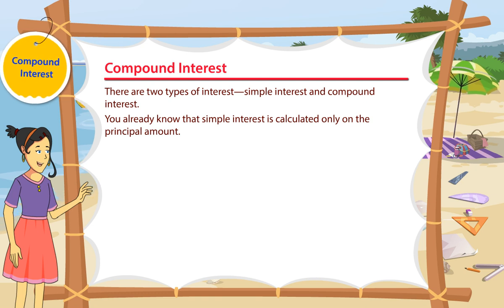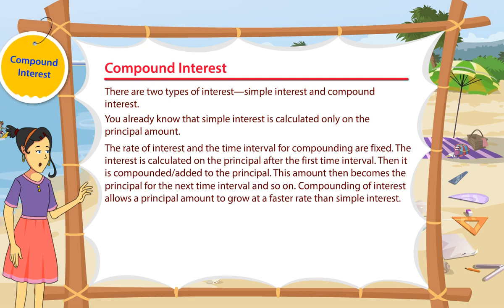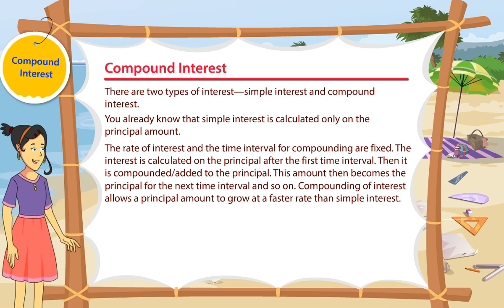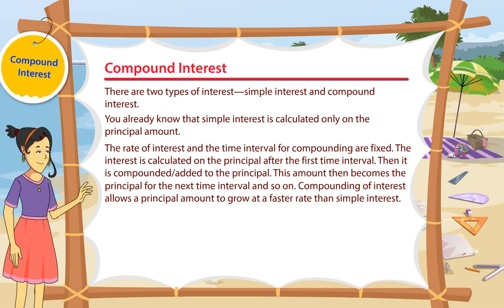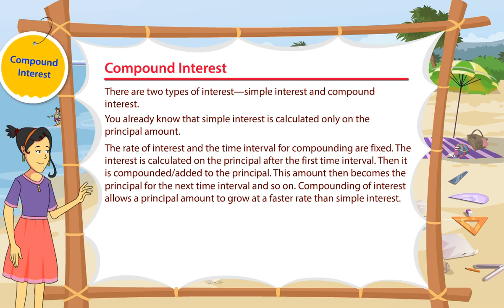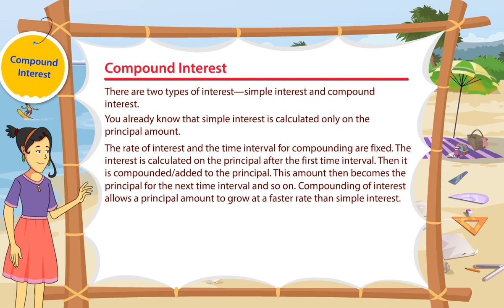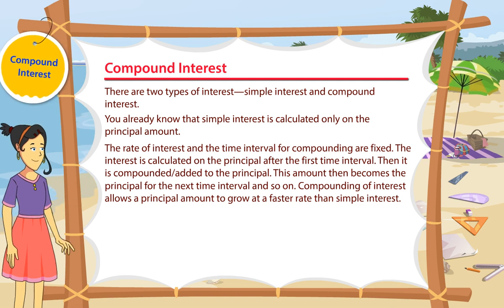In calculating compound interest, the rate of interest and the time interval for compounding are fixed. The interest is calculated on the principal after the first time interval. Then it is compounded — added to the principal. This amount then becomes the principal for the next time interval, and so on.